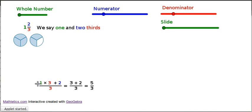So down here we can see, writing it mathematically, we've got 1 lot of 3 from the whole plus the extra 2. So 3 plus 2 is 5, 5 thirds.